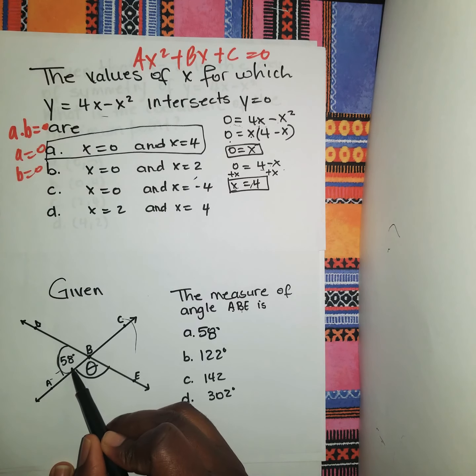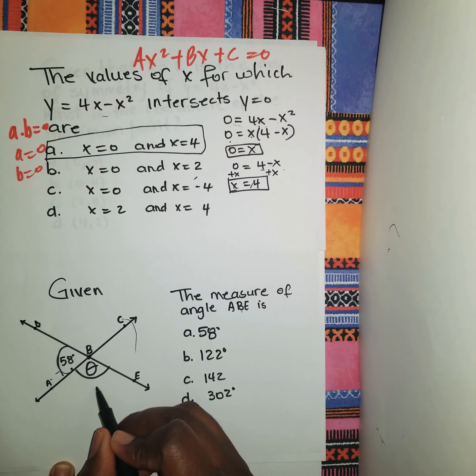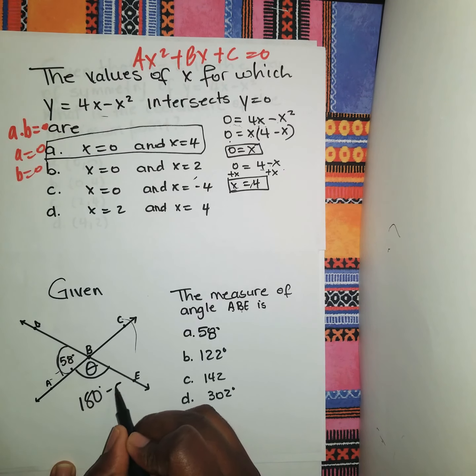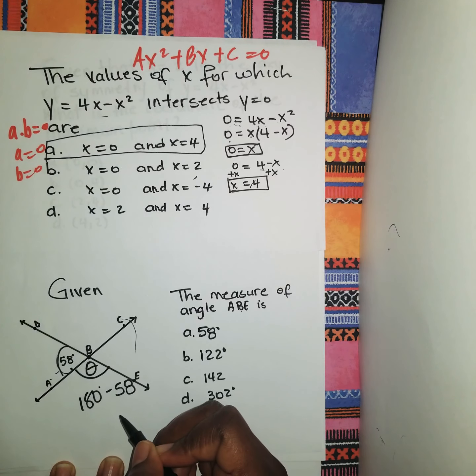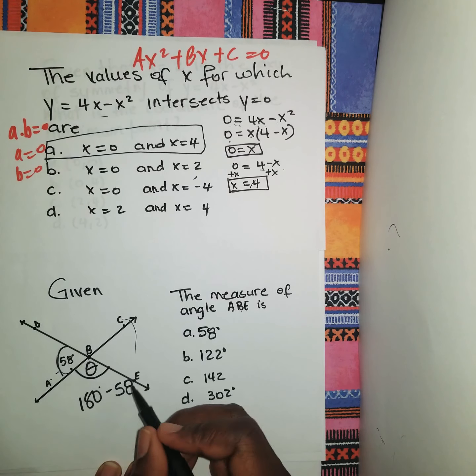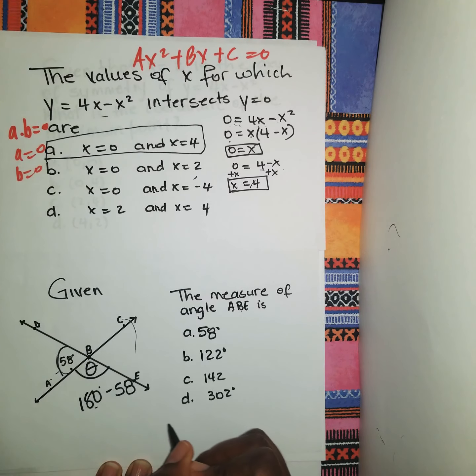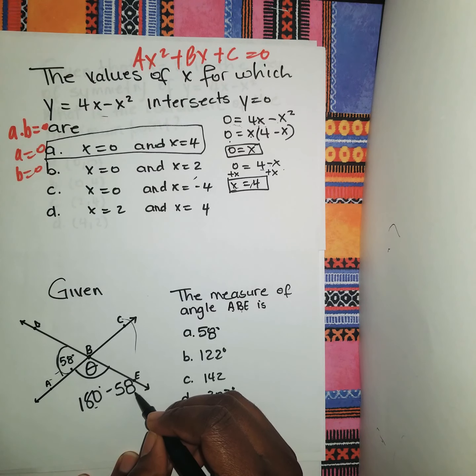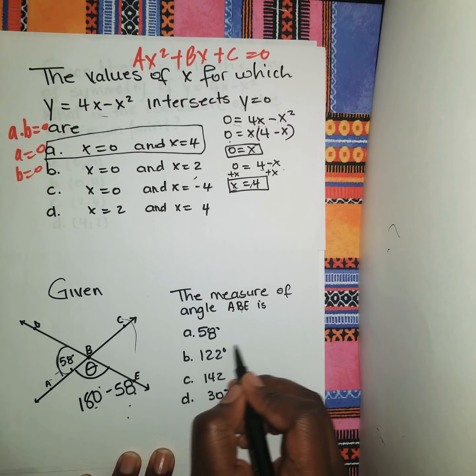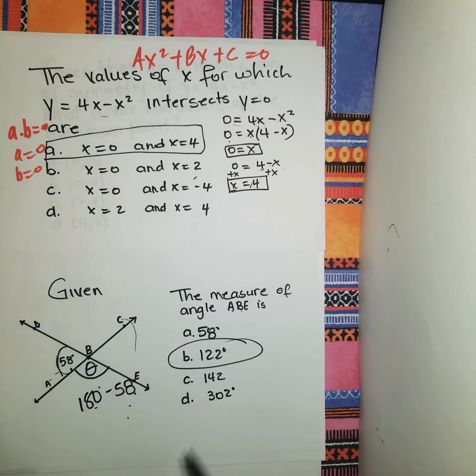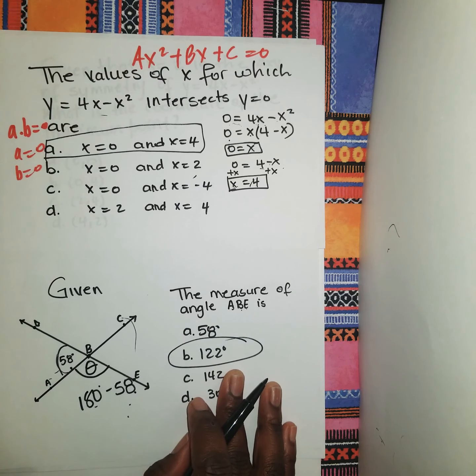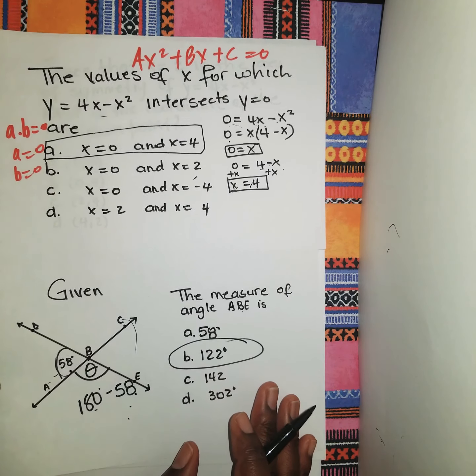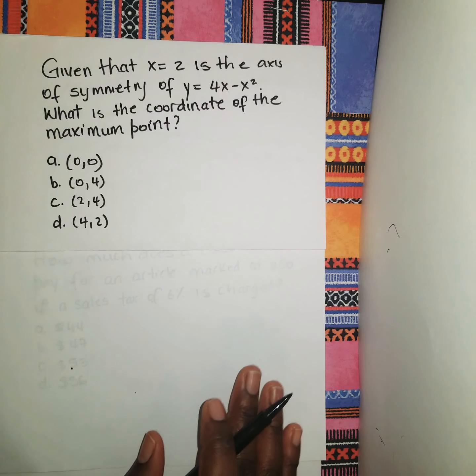So ADB and E here represents a straight line. If this angle here is 58°, the angle on the opposite side will be 180 - 58, all right guys. So the solution for this one would be 122°. This is basically angles on a straight line equal to 180°. Let's move on to the second one.